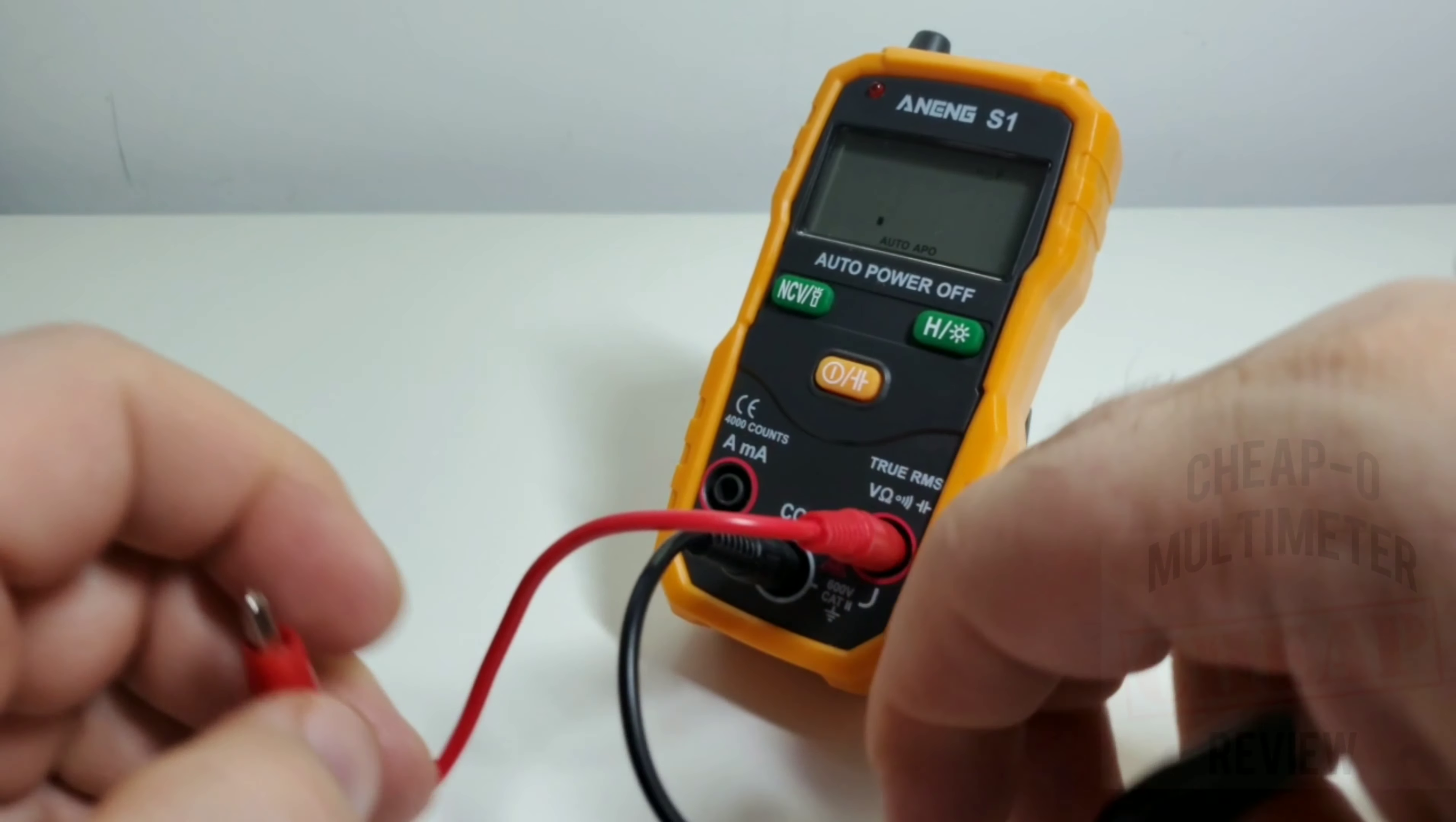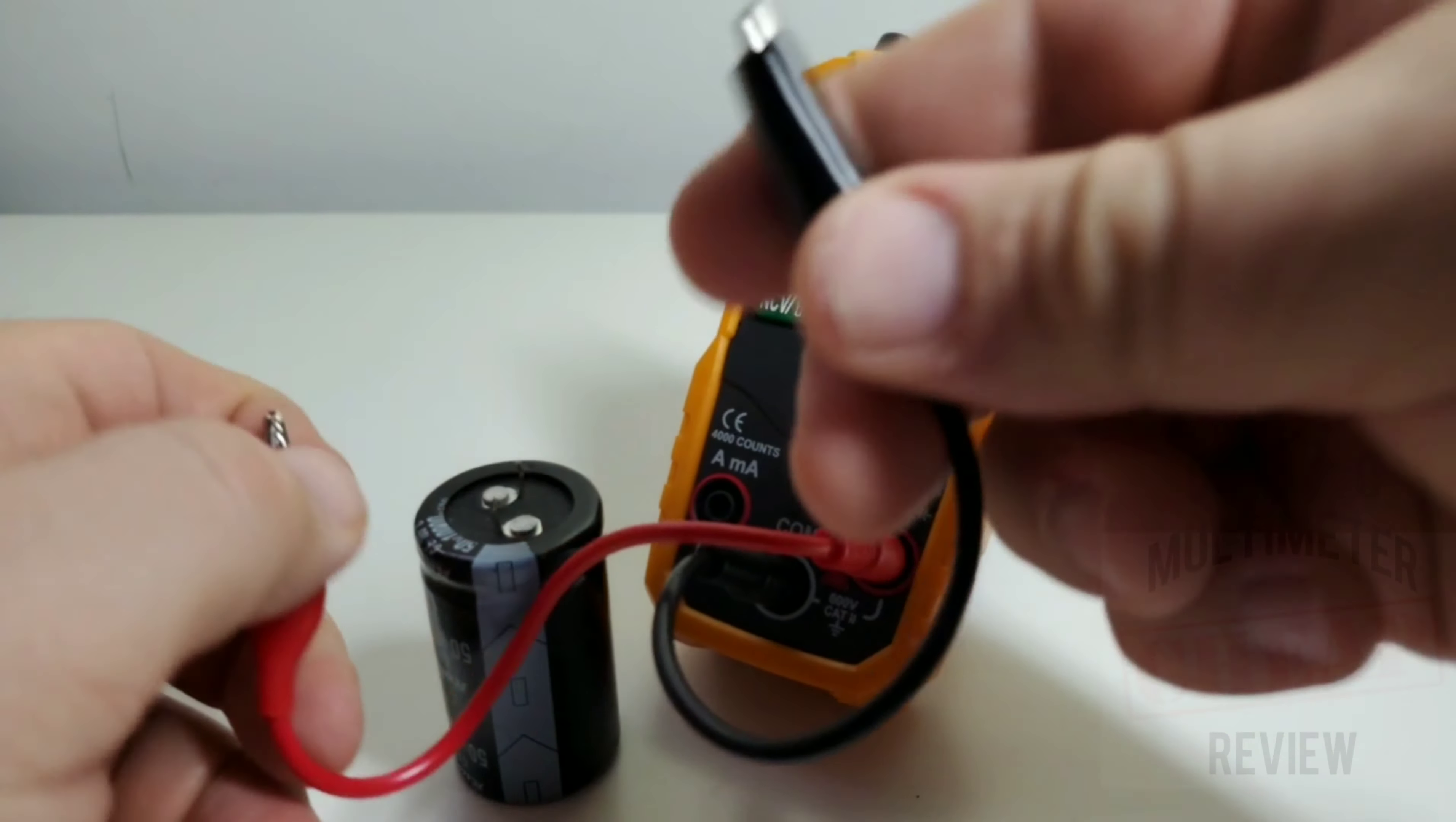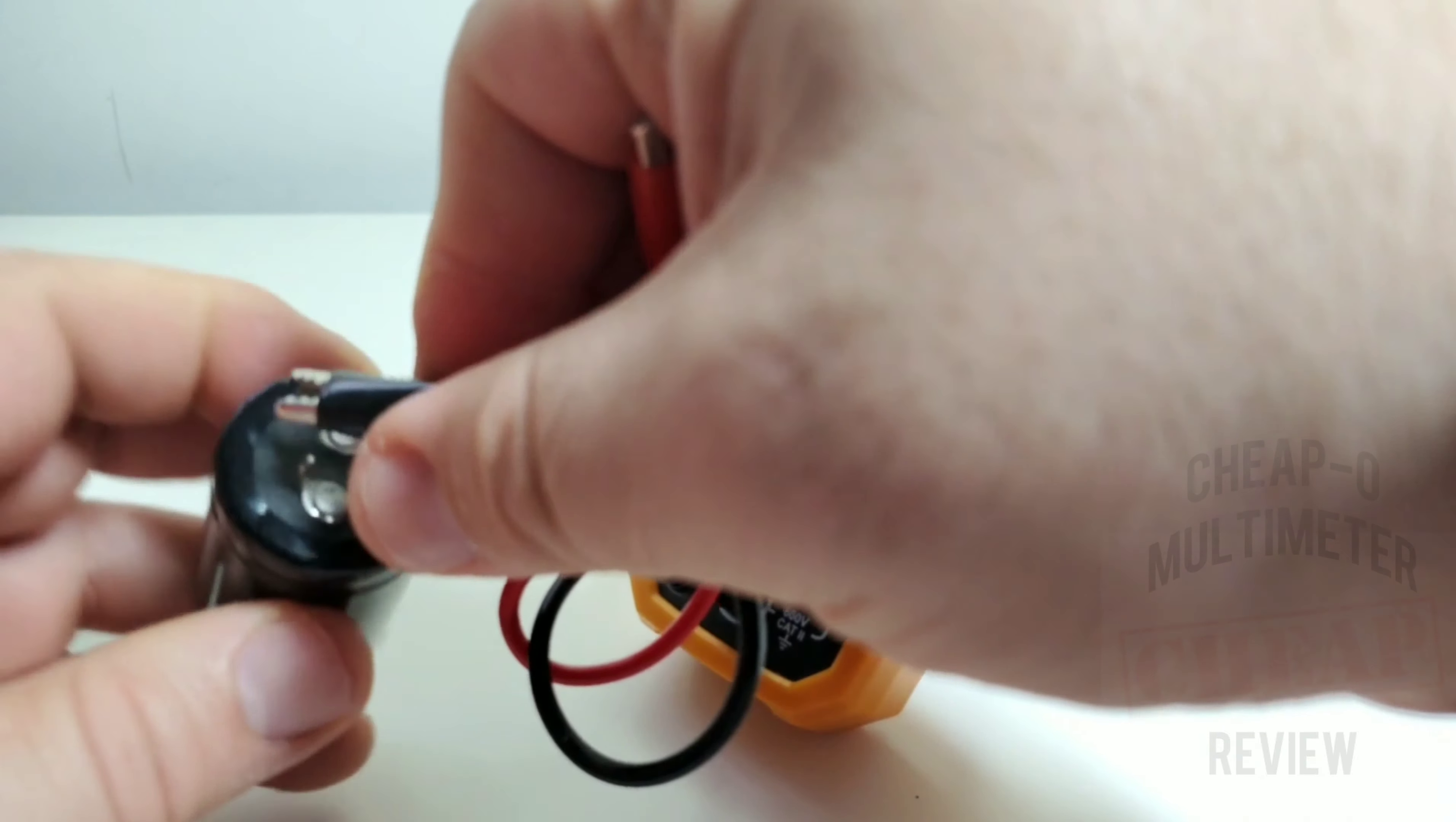Come on baby, look at that! 3.3 millifarad, 3300 microfarad, that is a win! Whoa, surprising, good job ANENG. Hey you know what, I always like surprises when it comes to cheapo multimeters. Let's see what we can do here. Here's a 10,000 microfarad. Now I don't have my hopes too high for this, but you know what, you never know.